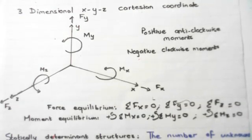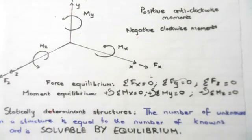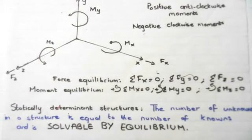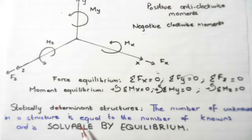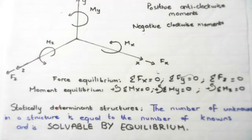We have different types of structures. Initially, there is something known as a statically determinate structure — where the number of unknowns in a structure is equal to the number of knowns and is solvable by equilibrium. So if a structural element is solvable by equilibrium, it's statically determinate.